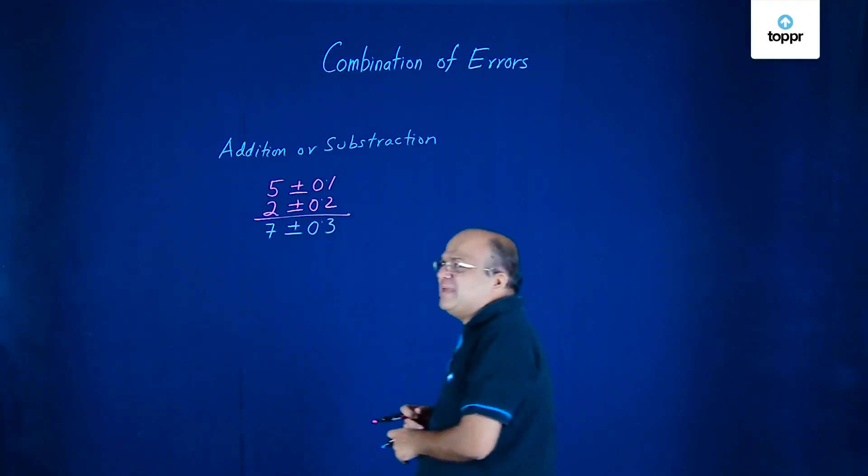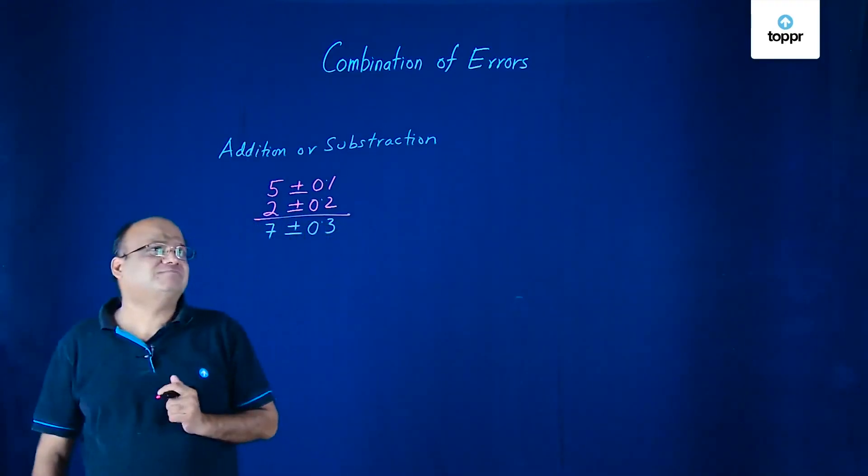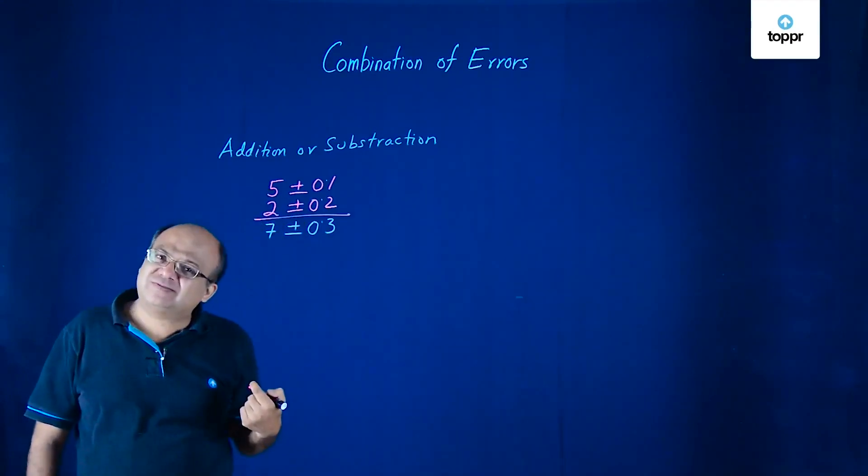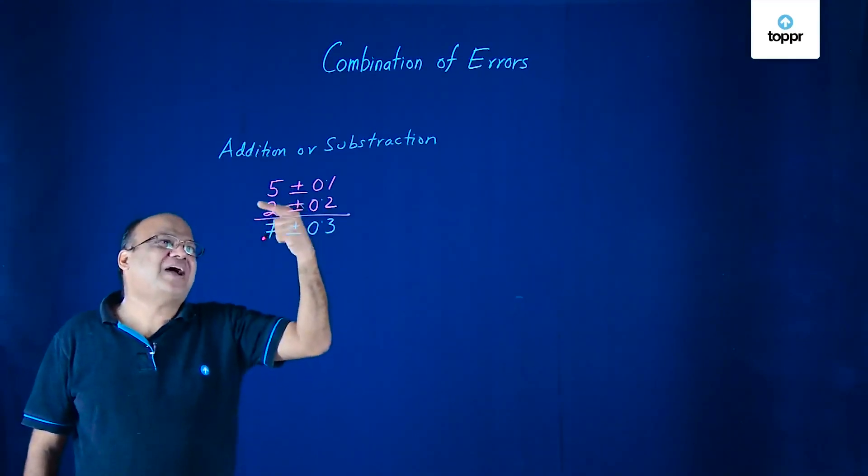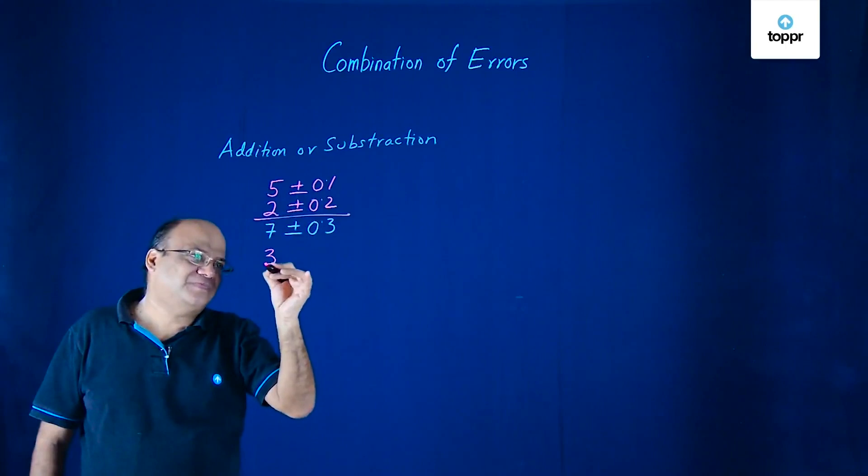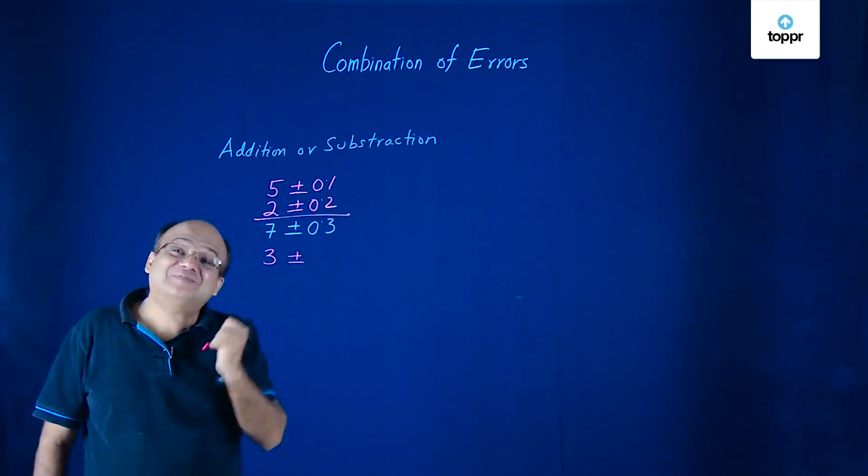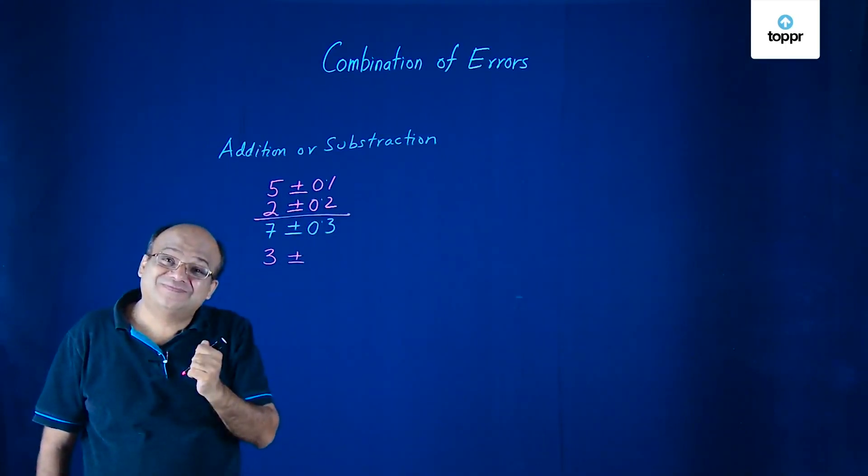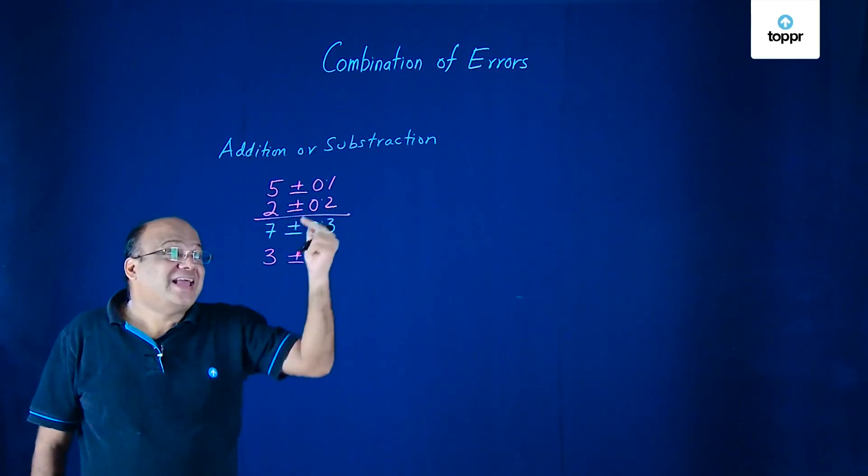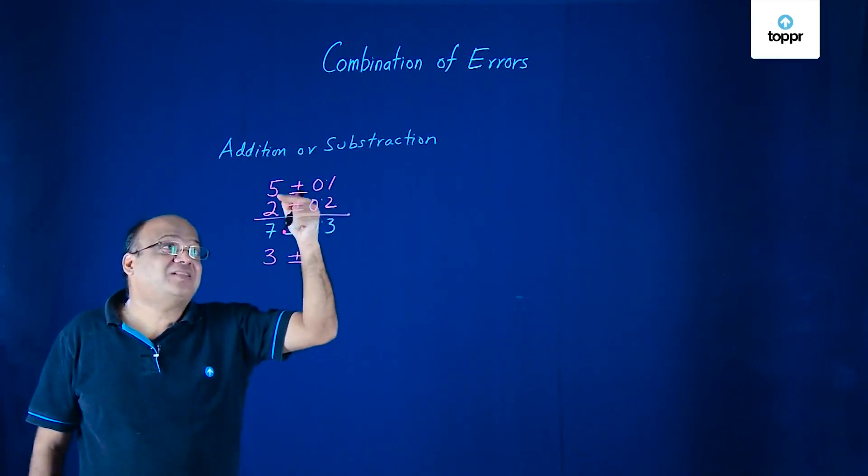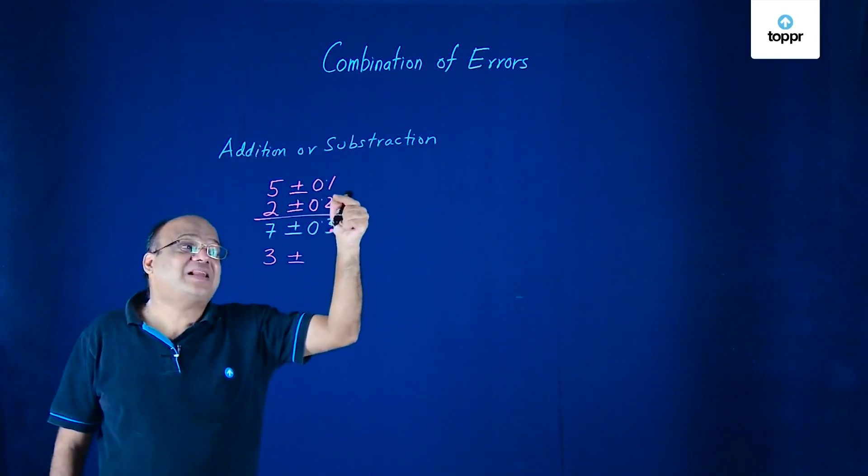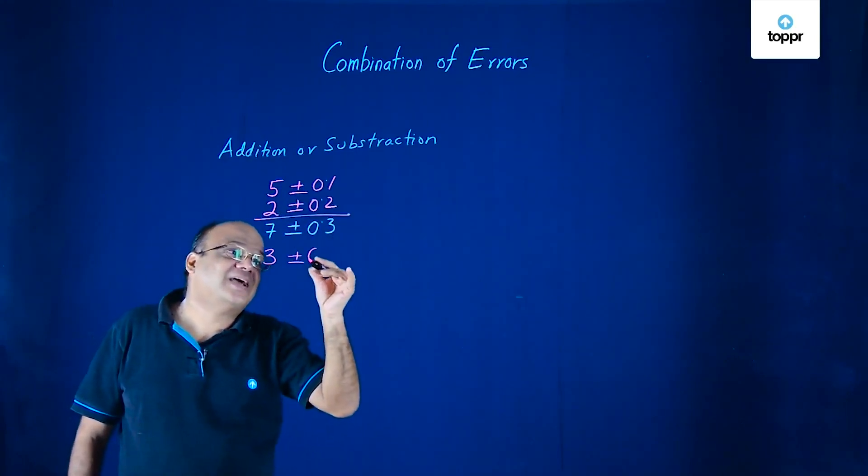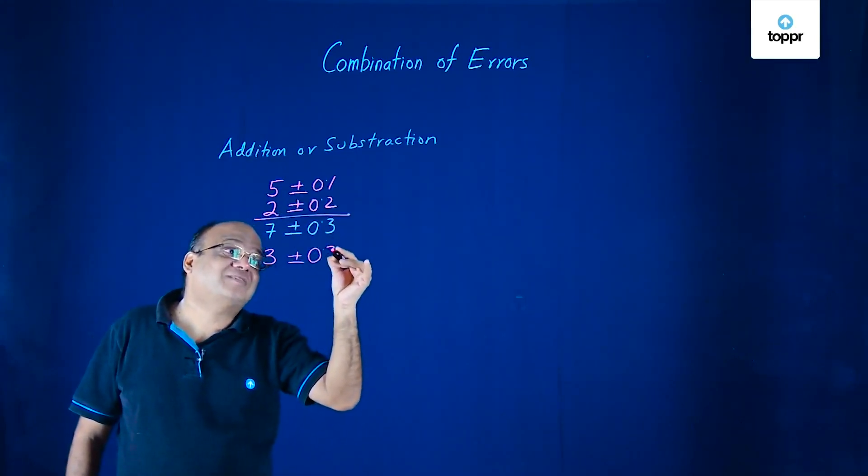What will be the difference? What is the difference of these two measurements? So you will do 5 minus 2, 3. Plus minus how much? Even when you are subtracting these measurements, the errors will still get added and the error will be 0.3.